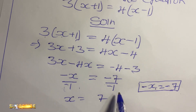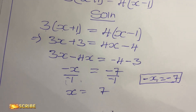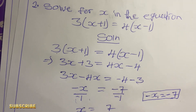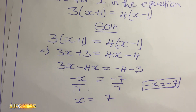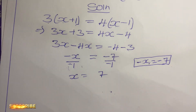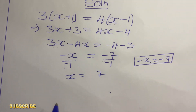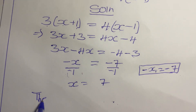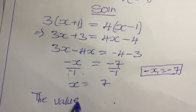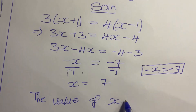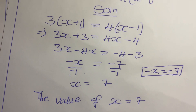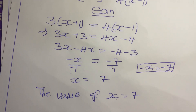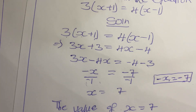Since the question says 'solve for x in the equation' rather than 'find the truth set,' we do not write a set notation conclusion. We simply state that the value of x is 7.